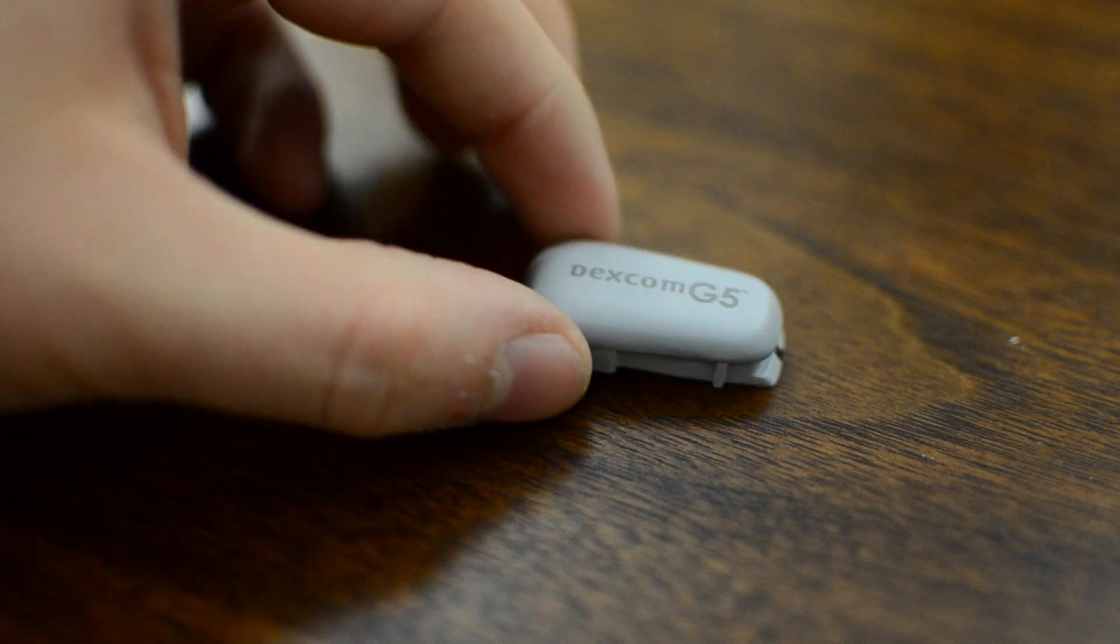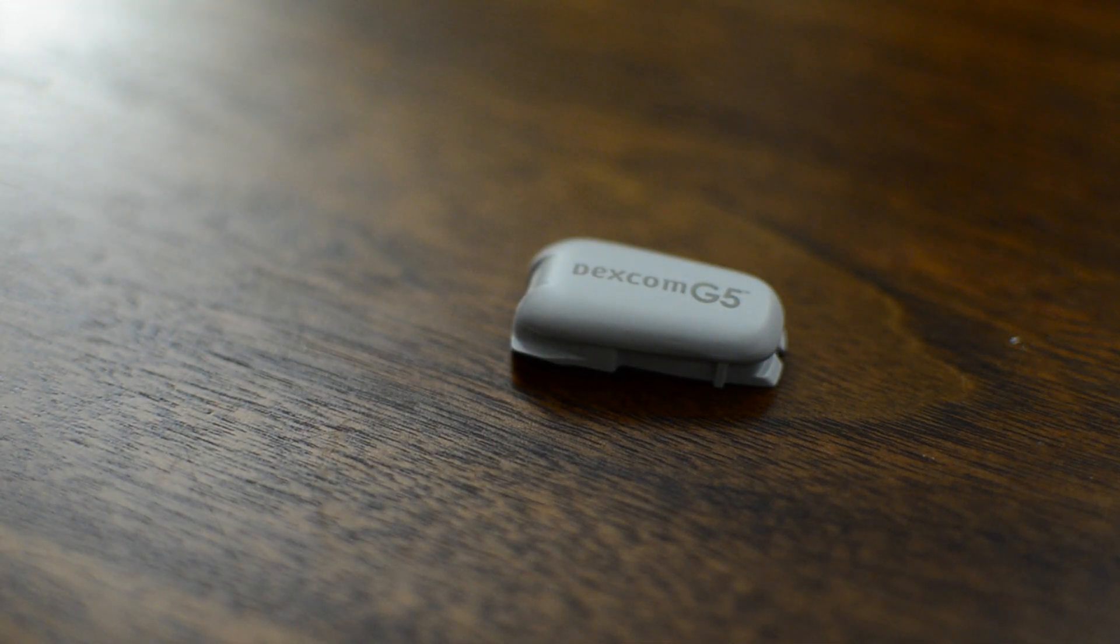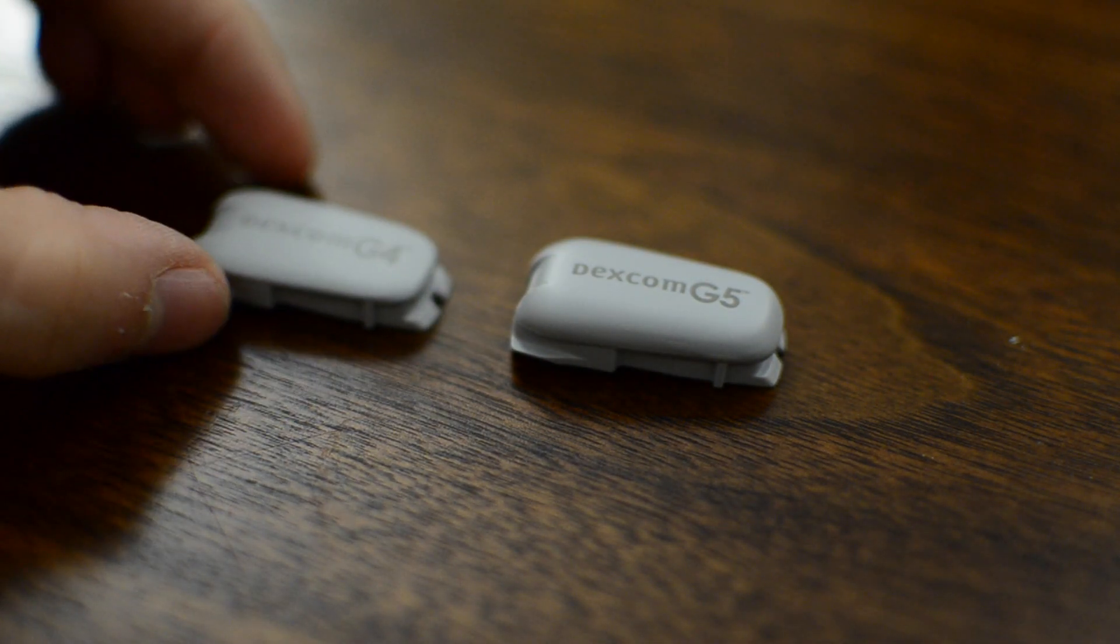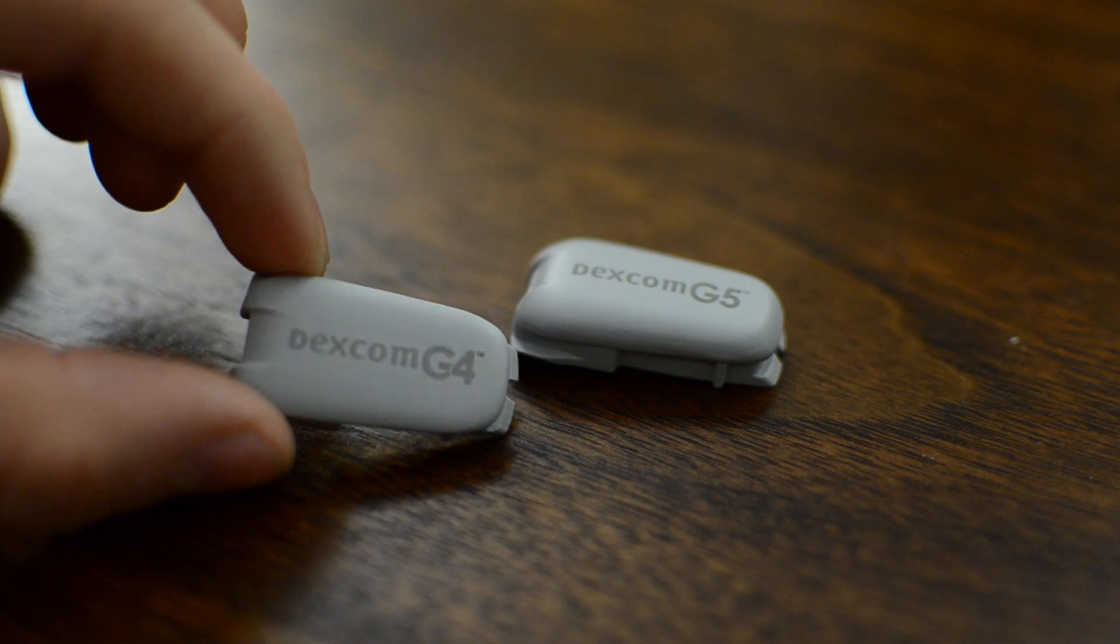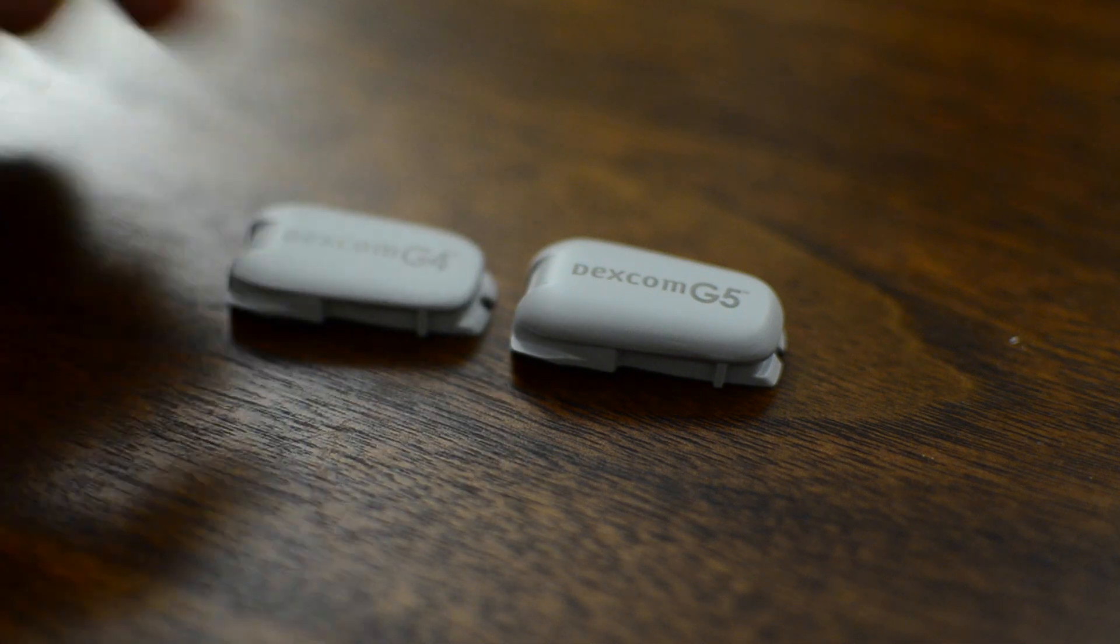So if we look at the sensor itself, you first may notice it's a little bit chunkier than the last generation G4. Other than that though, it's pretty much the same size. It still uses the same sets that we had last time. If we compare them side by side, you can basically see it's just a bit taller.